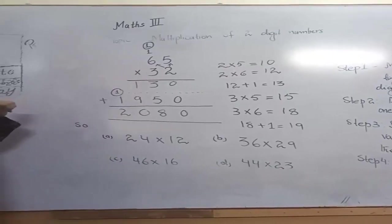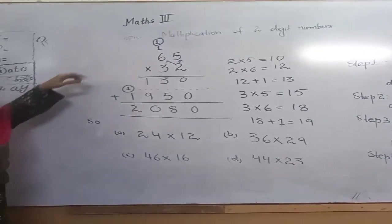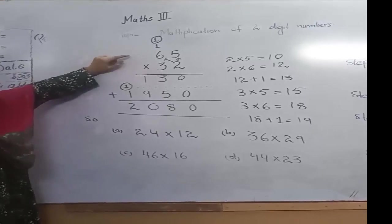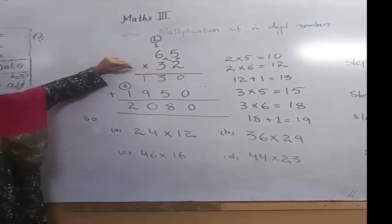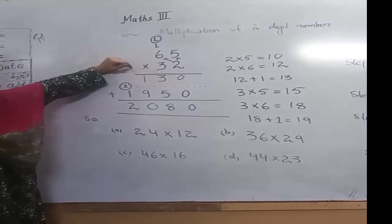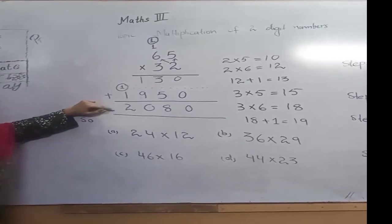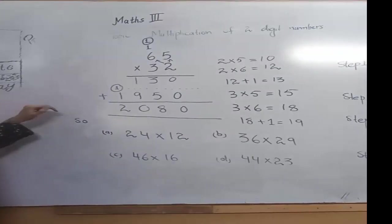Dear students, in this lesson we multiply a 2-digit number by another 2-digit number. 65 multiplied by 32. The answer we will get is 2080.